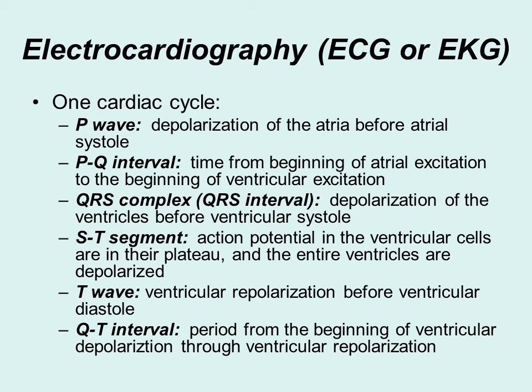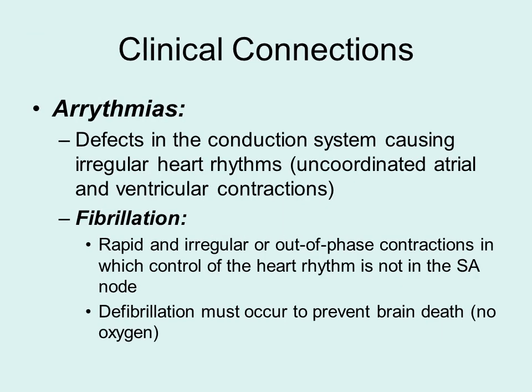On an EKG, one cycle should be at regular intervals. If the peaks are not at regular intervals, that is indicative of arrhythmias — an irregular heart rhythm — meaning there is some defect with the conduction system and you are not coordinating contractions of the atria and ventricles together. Fibrillation is very rapid, irregular contractions of the heart — not in sinus rhythm — and you must defibrillate it to prevent brain death, because the heart is not pumping efficiently and tissues, especially the brain, are not receiving adequate oxygen.